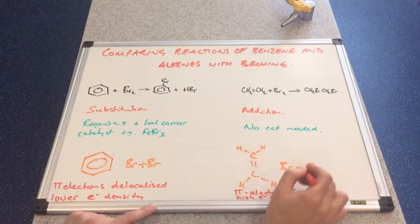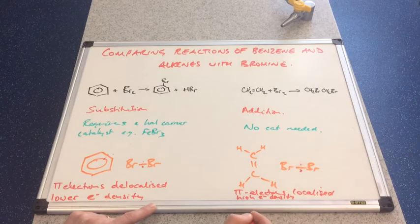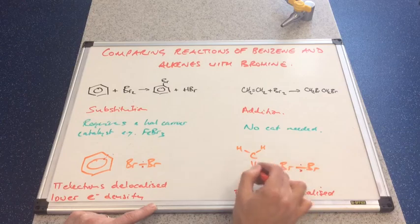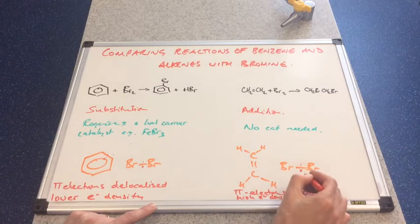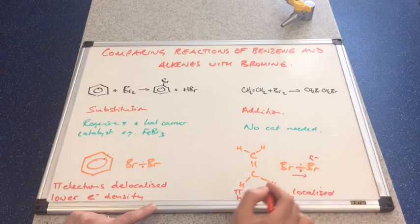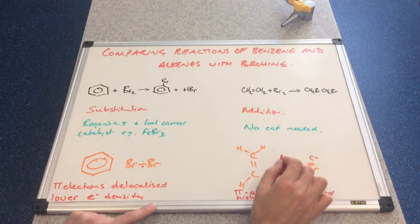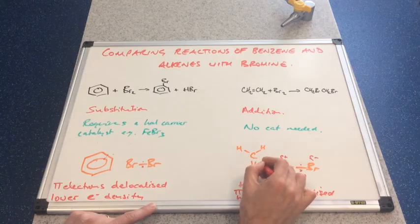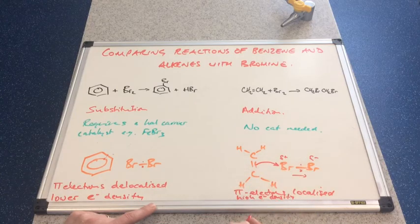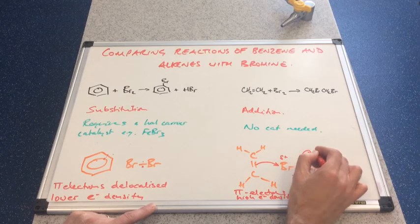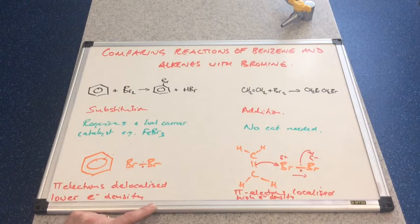And because of that, the pair of electrons in that covalent bond between the two bromines, they will be repelled by the high electron density here. And that will generate a dipole. So that will be slightly negative, that end will be slightly positive. And because we've got this dipole, the pi electron pair will be attracted to this bromine and it will break the bond.